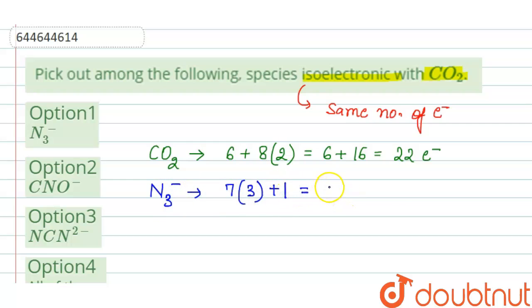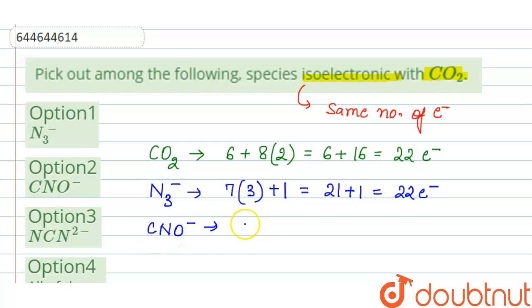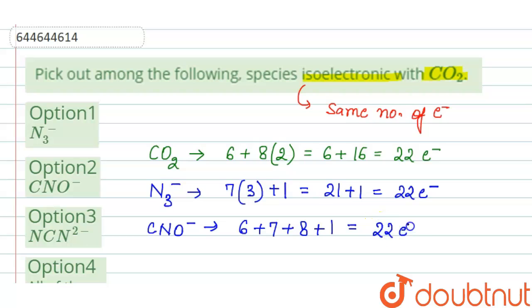So it will be 21 plus 1, which equals 22 electrons. Now in CNO⁻, the number of electrons in carbon is 6, plus nitrogen is 7, plus oxygen is 8, plus there is a negative charge, so plus 1. That equals 22 electrons.